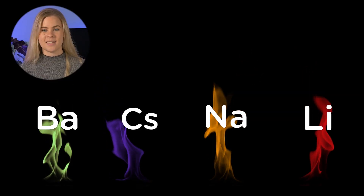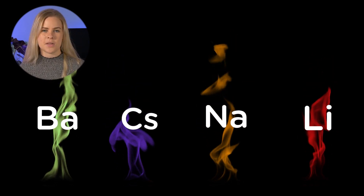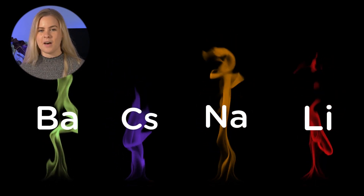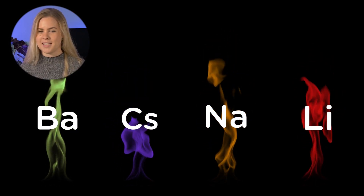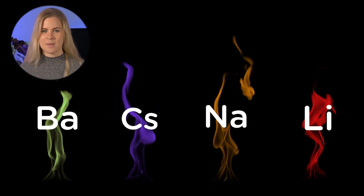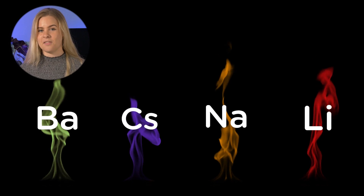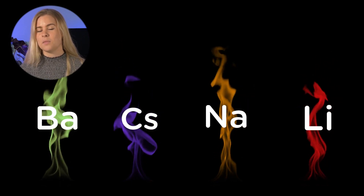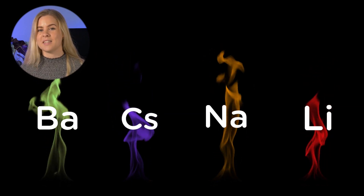The flame test is very straightforward. We take our sample of metal ions, place it into a Bunsen flame, and the color that the flame turns will tell us which metal is being burned. However, as with everything in science, there is a bit more of a complicated mechanism going on that explains exactly why the flame changes color.